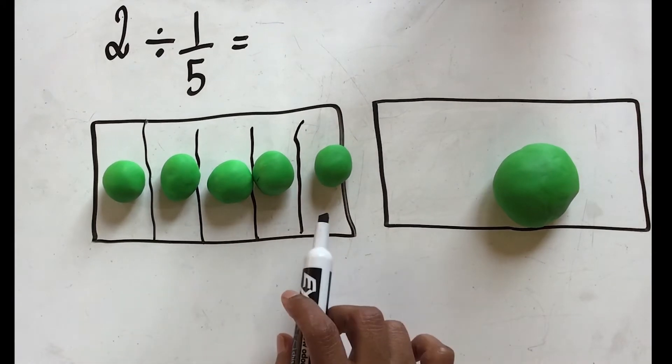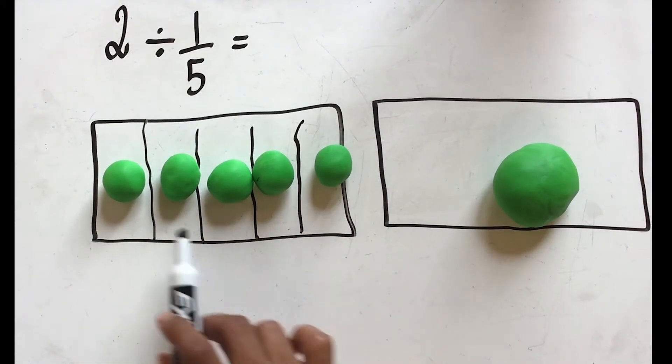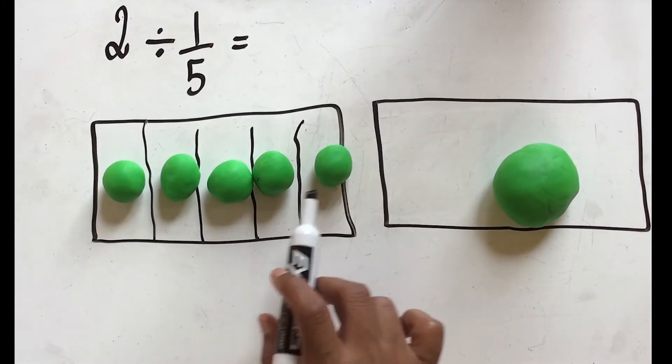As you can see, in the first ball of Play-Doh, dividing it into the fifths, we have five of these little pieces.